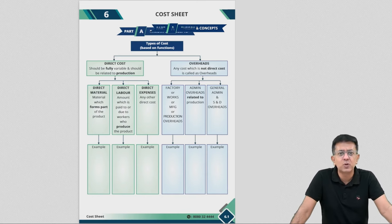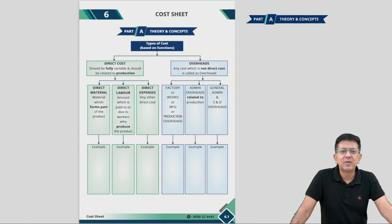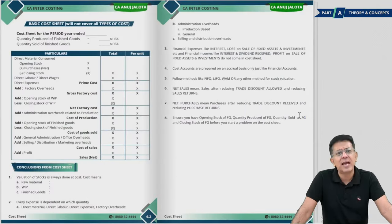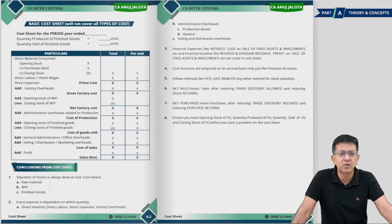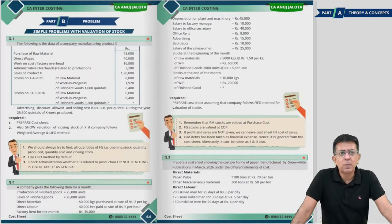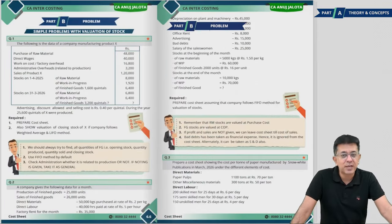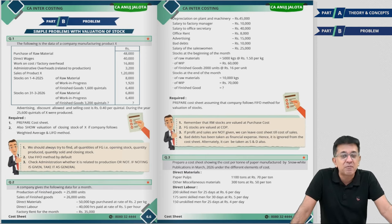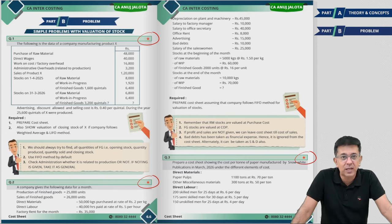Part A, which you will see on the screen right now, will have the entire theory and concepts summarized in the form of charts like this. Once Part A is done, Part B begins. Part B will have problems, and every problem will have a star rating.